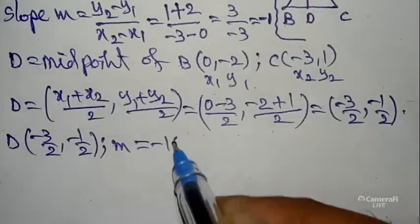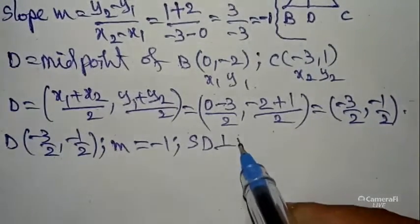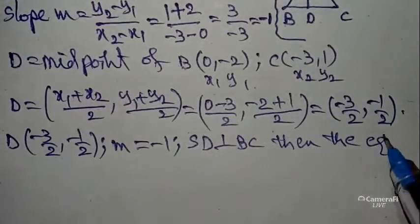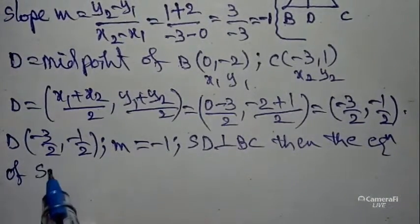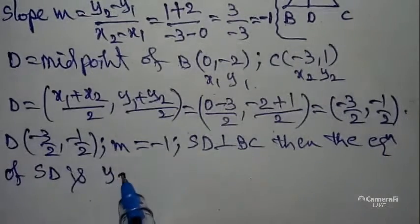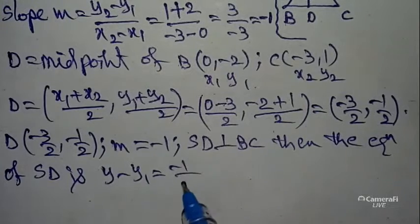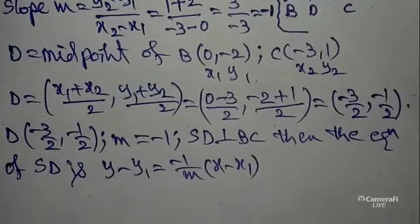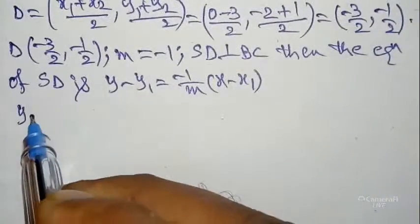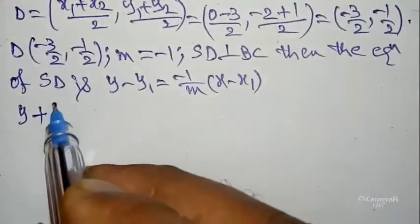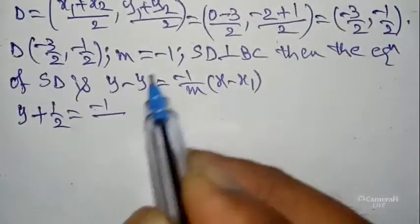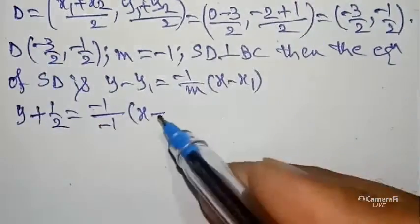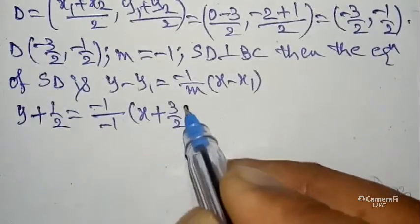Slope m = -1. Since SD is perpendicular to BC, the equation of SD uses the perpendicular slope formula: y - y1 = (-1/m)(x - x1). Here the point is D = (-3/2, -1/2), so x1 = -3/2 and y1 = -1/2. Substituting: y - (-1/2) = (-1/(-1))(x - (-3/2)), which gives y + 1/2 = 1 · (x + 3/2).